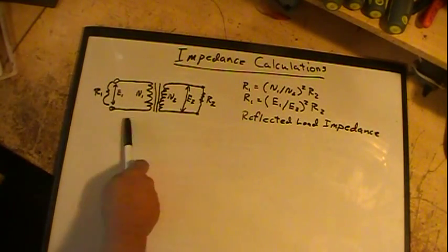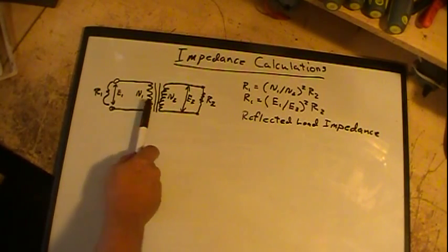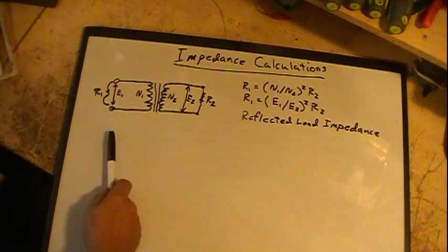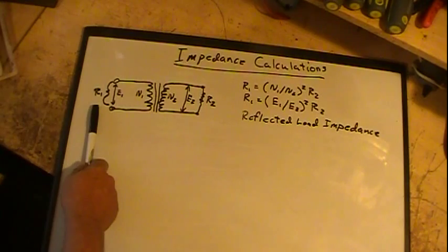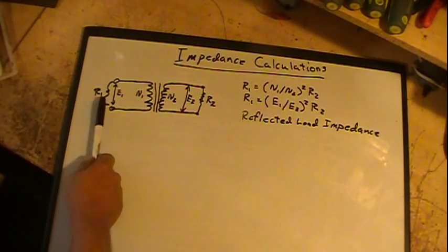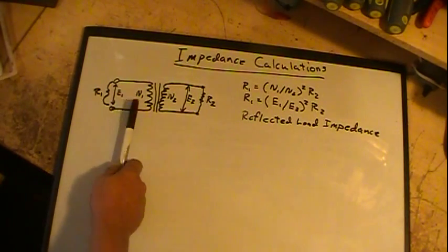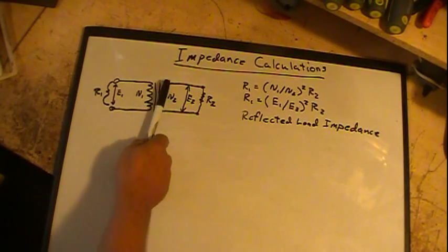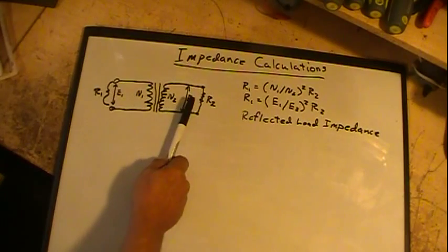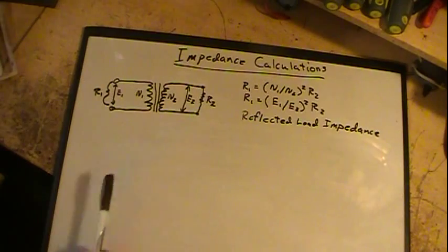So basically we just got a basic transformer here, just single winding for input and output, or primary and secondary. R1 is going to be what we're going to show how to figure. We have a certain voltage on the primary, we'll call that E1. N1 is the number of turns of the primary, N2 is the number of turns of the secondary, E2 is the output voltage, and R2 is our load.